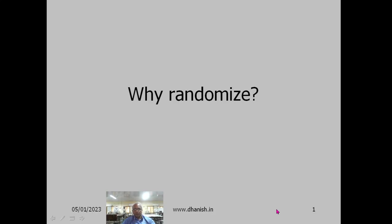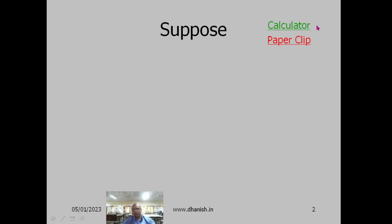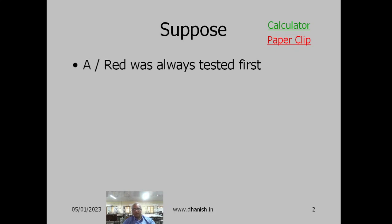Why should we randomize our experiment? Consider an experiment where you want to test two calculators, A and B. You make a list of several numbers and ask a person to compute the sum of squares using first calculator A, then calculator B. So you are always using calculator A first and then only using calculator B.